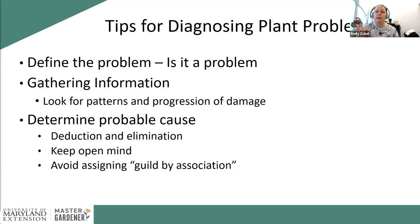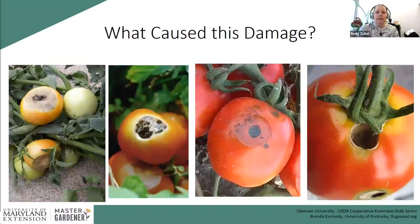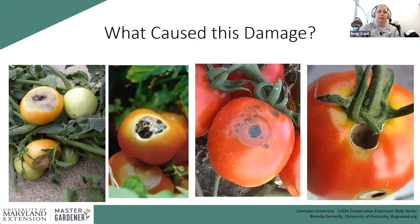Keep an open mind and avoid guilt by association. A lot of times people say 'there's an insect on my plant, so it must be the cause' — 99% of the time that's not likely. There are many insects out there that don't match the feeding damage present; a lot of them are just living their lives. Here are four tomatoes with four different types of damage that you could identify using deduction.